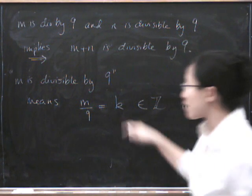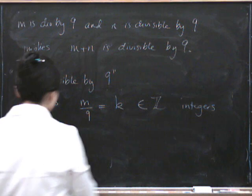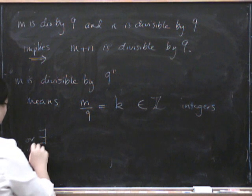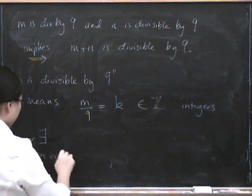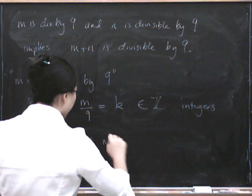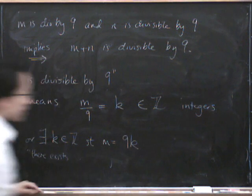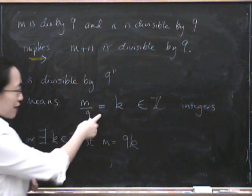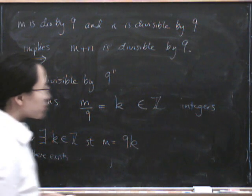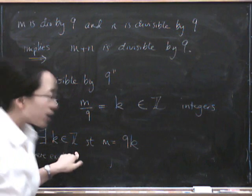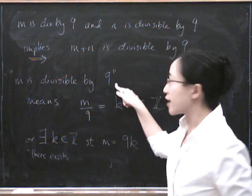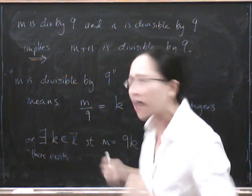Well it turns out that you can just move this thing up here and say that there exists, remember this is the there exists symbol, there exists some integer K such that M equals 9K. So I hope you can see that this statement is the same as that statement and it turns out that it's more convenient to use this second way of defining divisibility.